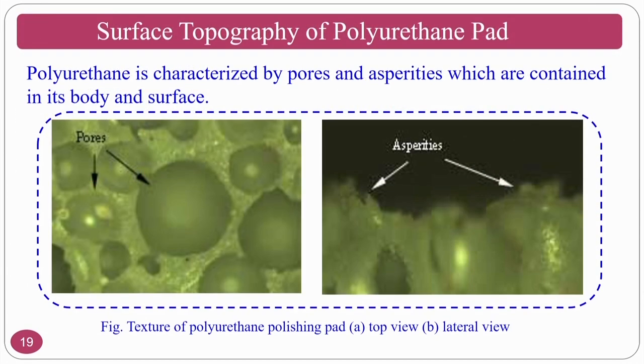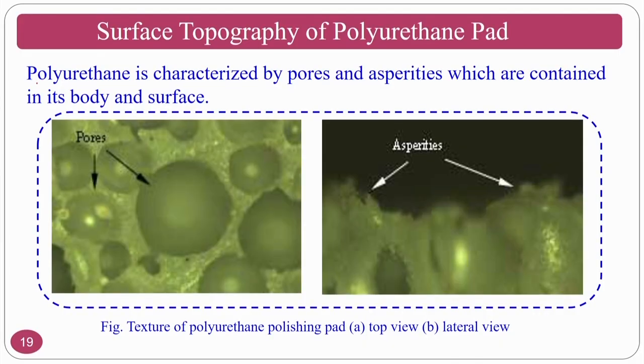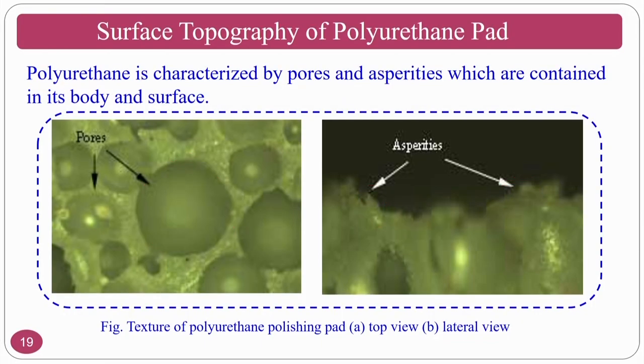Polyurethane pads are most commonly used in pad polishing and chemo mechanical polishing. Polyurethane is characterized by pores and asperities connected throughout the body surface. These pores and asperities host the abrasive slurry, and when pressure is applied during polishing, the super-fine abrasive particles perform the polishing operation on the workpiece.